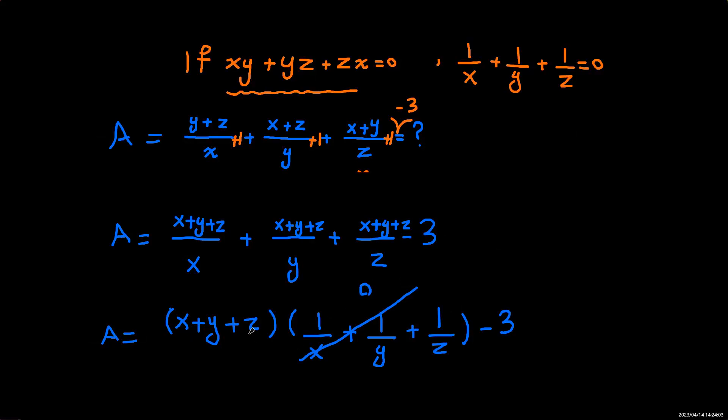So x plus y plus z times 0 is 0. So we'll be left with a negative 3. So A equals negative 3.